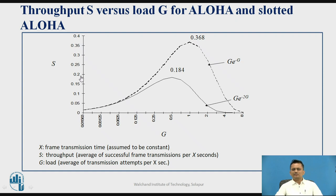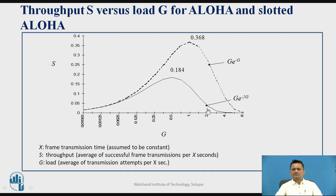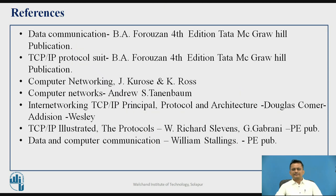Comparing performance: S is the throughput from the network, x is the frame transmission time, and G is the load — the average number of transmission attempts per x seconds. For pure Aloha, the maximum throughput achievable is 0.184. For slotted Aloha, the throughput is almost double that of pure Aloha. This is the performance advantage of slotted Aloha. These are the references used for this presentation.